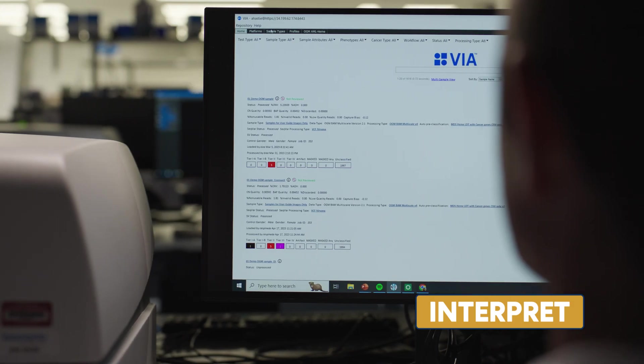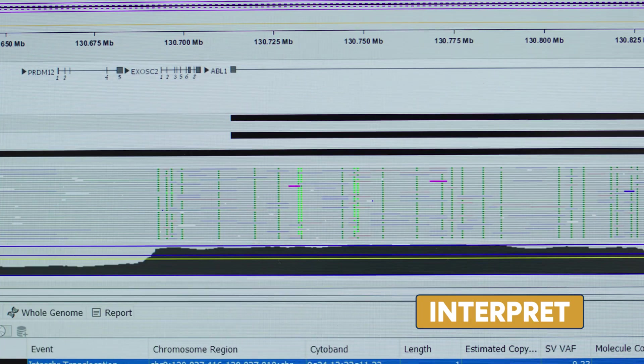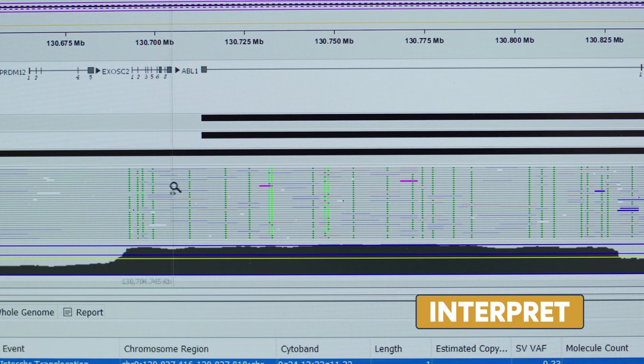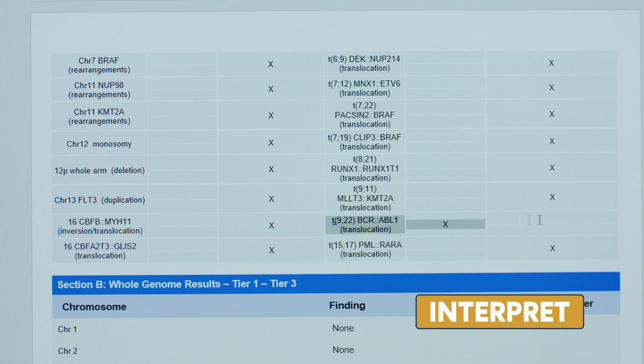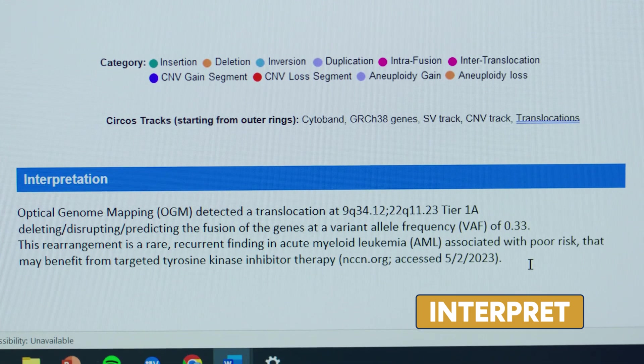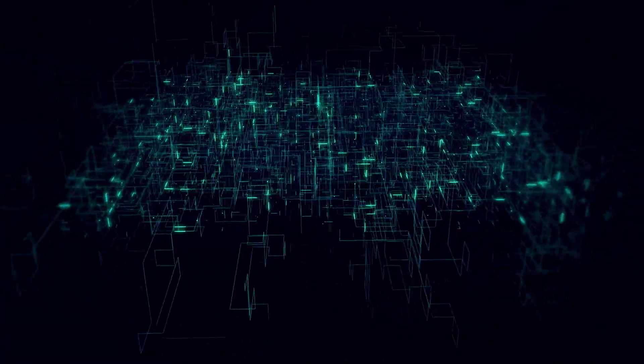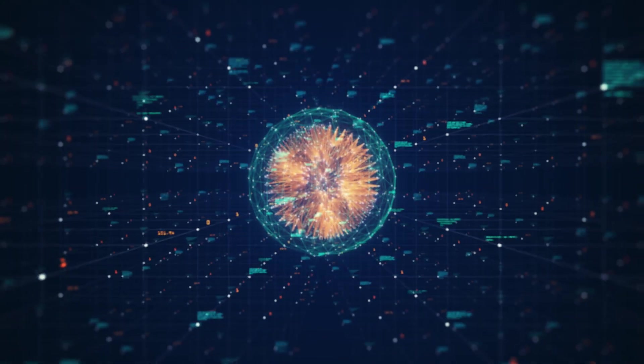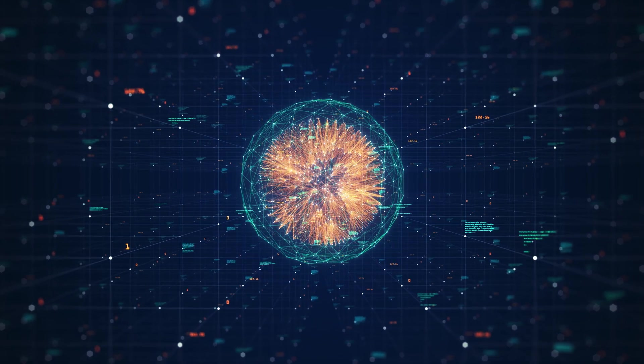With VIA, you can get to what matters faster with intelligent automation for filtering, classifying, annotating, and interpreting variants, all backed up by numerous external curated databases and by integrating your own local knowledge base.